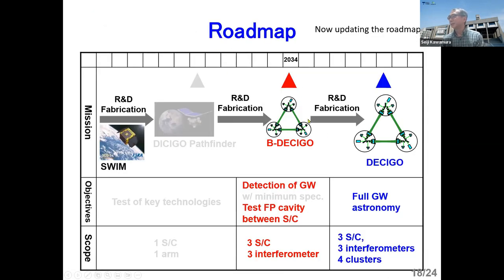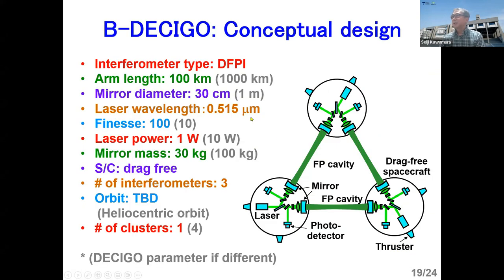This is the roadmap for DECIGO. Before DECIGO, we planned to launch B-DECIGO. And we aimed to launch that in 2034, which is very challenging. But we just put this number at present. And B-DECIGO is a kind of smaller version of DECIGO. And the interferometer type is the same. Arm lengths are just 100 km instead of 1,000 km. Mirror diameter is smaller. And wavelength, same. Finesse, 100, instead of 10. And laser power, 1 watt. Mirror mass, 30 kg. And just one cluster, but containing three interferometers.